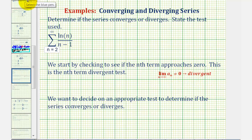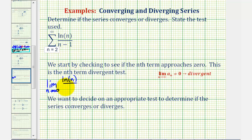So we want to find the limit as n approaches infinity of a sub n, which is natural log n divided by n minus one. Notice as n approaches infinity, this would be the indeterminate form because we'd have infinity divided by infinity.